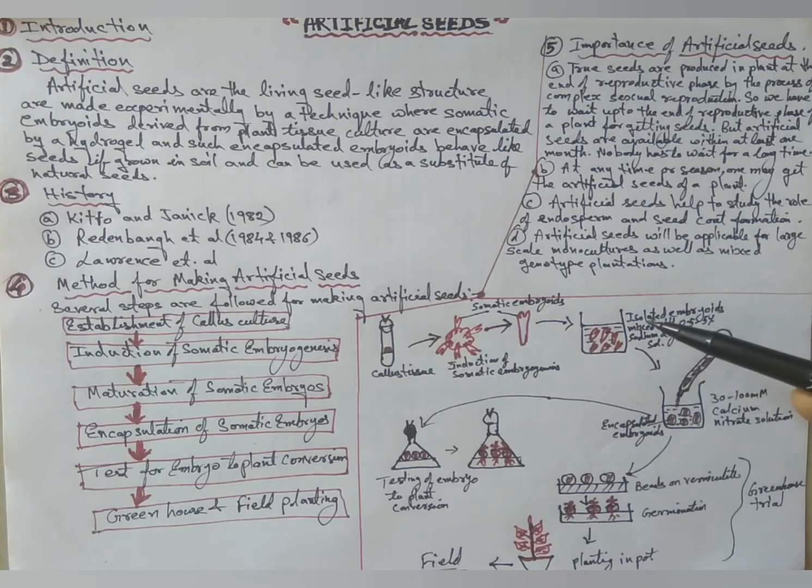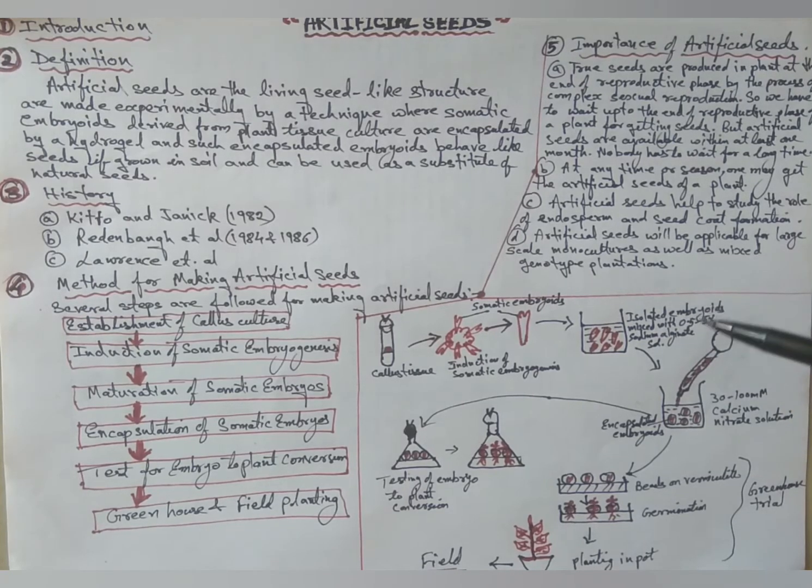Surface complexation begins immediately and the drops are gelled completely within 30 minutes. After encapsulation, the artificial seeds are tested by two steps.